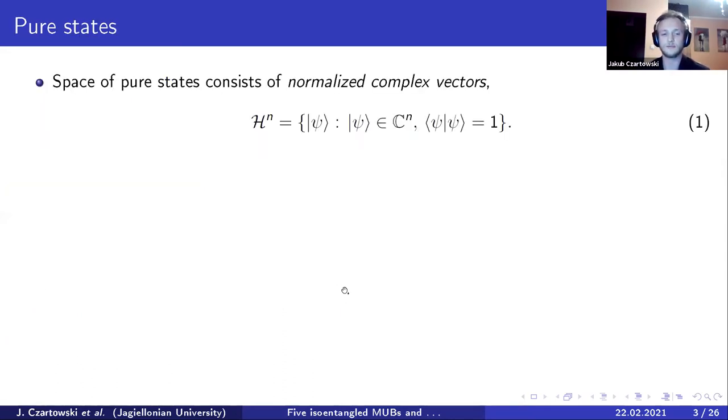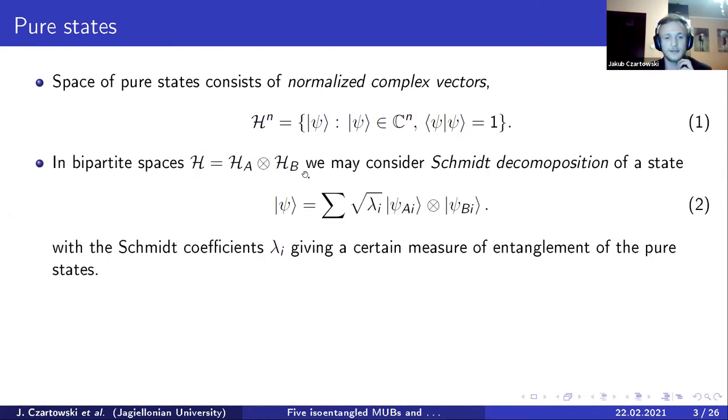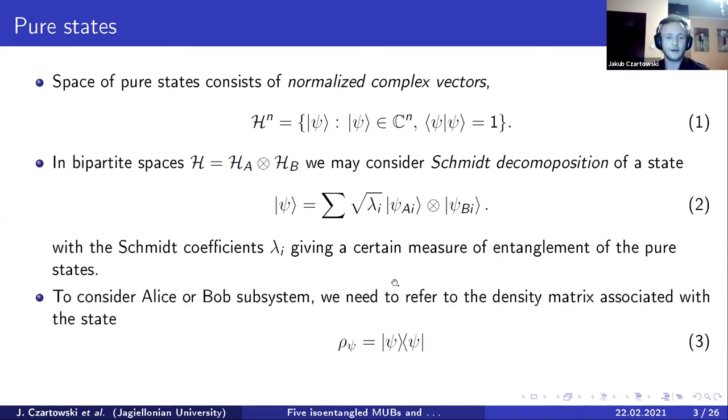So very slowly, just to be easy on this last talk of today's session, we are working generally with normalized complex vectors in the n-dimensional dimension of n. And these are our states. And basically, any such state can be decomposed into the Schmidt form. That is, we introduce the Schmidt coefficients and sum over certain local states. And these Schmidt coefficients can be seen as a certain measure of entanglement of the pure state.